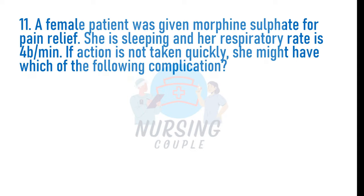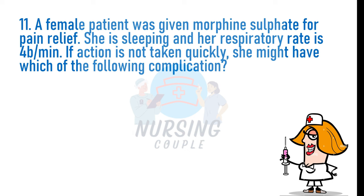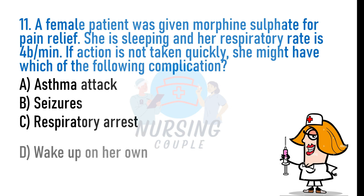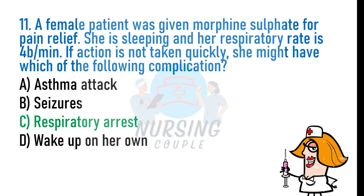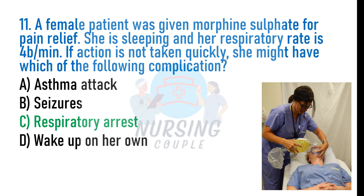A female patient was given morphine sulfate for pain relief. She is sleeping and her respiratory rate is 4 breaths per minute. If action is not taken quickly, which of the following complications might she have? A. Asthma attack, B. Seizures, C. Respiratory arrest, D. Wake up on her own. The answer is C: Respiratory arrest. Morphine overdose leads to depression of the respiratory center in the brain, causing decreased respiratory drive and respiratory arrest. If not treated quickly with naloxone, death may occur.